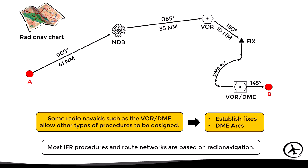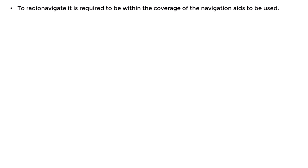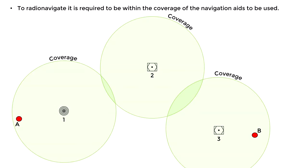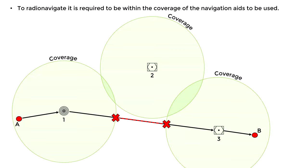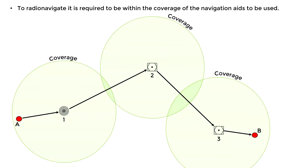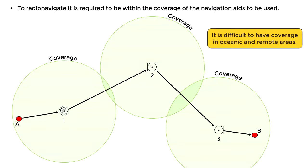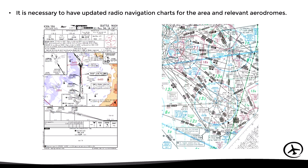It is important to note that most IFR procedures and route networks are based on radio navigation, so all IFR-equipped aircraft are capable of radio navigating. An important consideration is that to radio navigate it is required to be within the coverage of the NAVAIDs to be used. In this example we can see that it is not possible to fly from NAVAID 1 to NAVAID 3 directly, since there is a part of the route where there is no coverage. So the aircraft has to fly first to NAVAID 2 and then to NAVAID 3. Aircraft flying in remote or oceanic areas will have no coverage, so in those cases radio navigation is not an option. It is also important to have the updated charts for the area and the aerodromes where it is intended to fly.